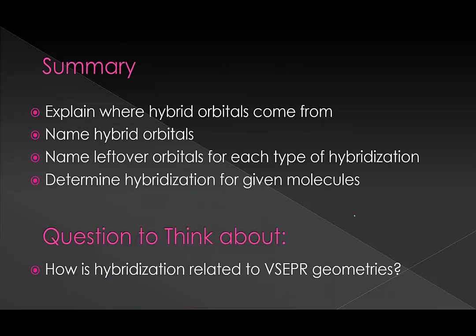So we've talked about where hybrid orbitals come from, named our hybrid orbitals, and looked at how there are leftover p orbitals for each type of hybridization. We'll be doing a lot more with this later on — leftover p orbitals do some things we'll talk about in more detail in the following videos. We also talked about determining hybridization for atoms within given molecules, and remember we can do this for any atom in larger molecules.